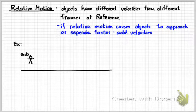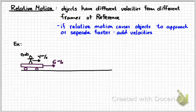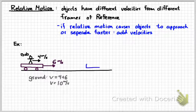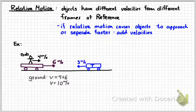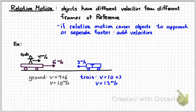For example, Bob is moving forward at 4 meters per second on a train moving forward at 6 meters per second. Relative to the ground, Bob's velocity is 10 meters per second. Now add a second train moving in the opposite direction at 3 meters per second — the relative motion causes the train to approach Bob faster, so you add those velocities. Bob's velocity relative to the ground is 10, plus 3, giving 13 meters per second.